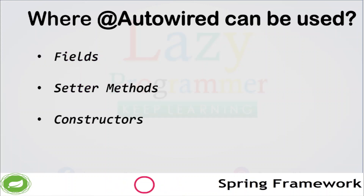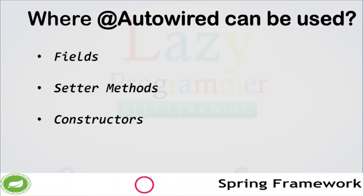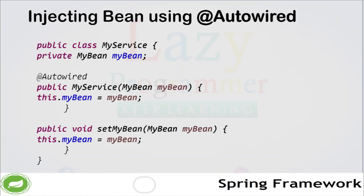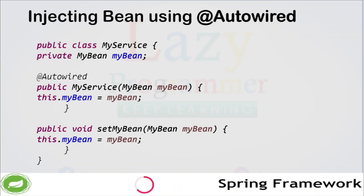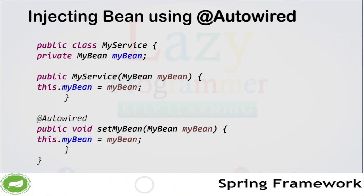Now the question is where can the @Autowired annotation be used? The @Autowired annotation can be used on fields, setter methods, and constructors. For example, myBean can be injected into the myBean field of myServiceObject using the constructor by adding @Autowired on the constructor. If we add @Autowired on the setter method, that will be a setter injection.